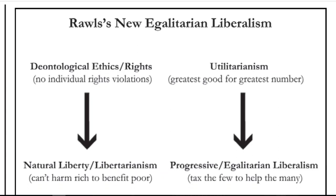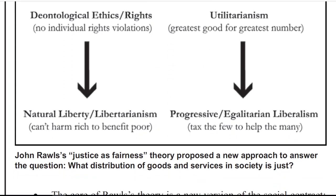Rawls' new egalitarian liberalism: from deontological ethics and rights, no individual rights violations leads to natural liberty or libertarianism, which cannot harm the rich to benefit the poor. And from utilitarianism — greatest good for the greatest number — progressive or egalitarian liberalism, which taxes the few to help the many.